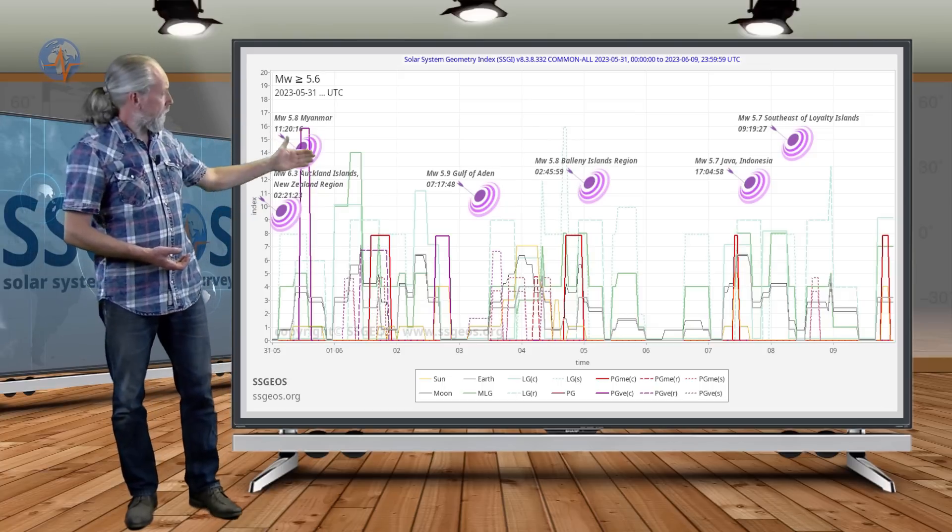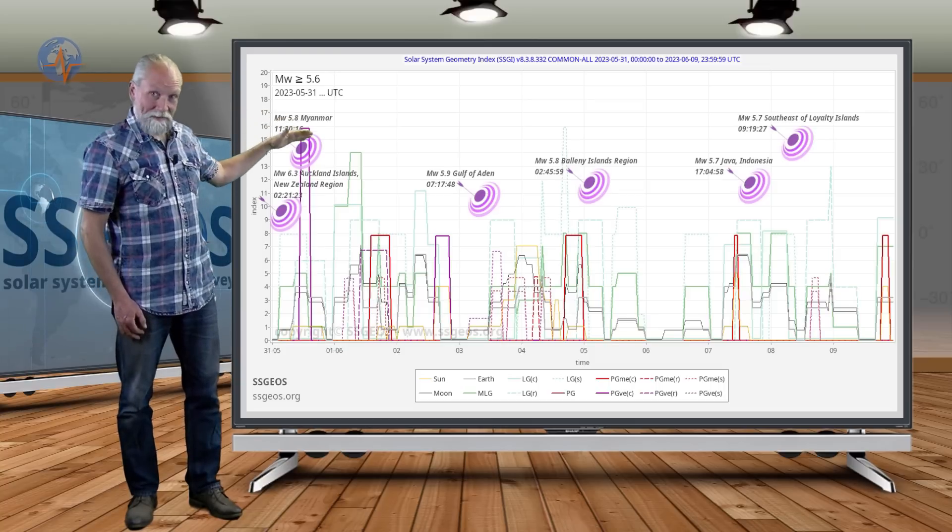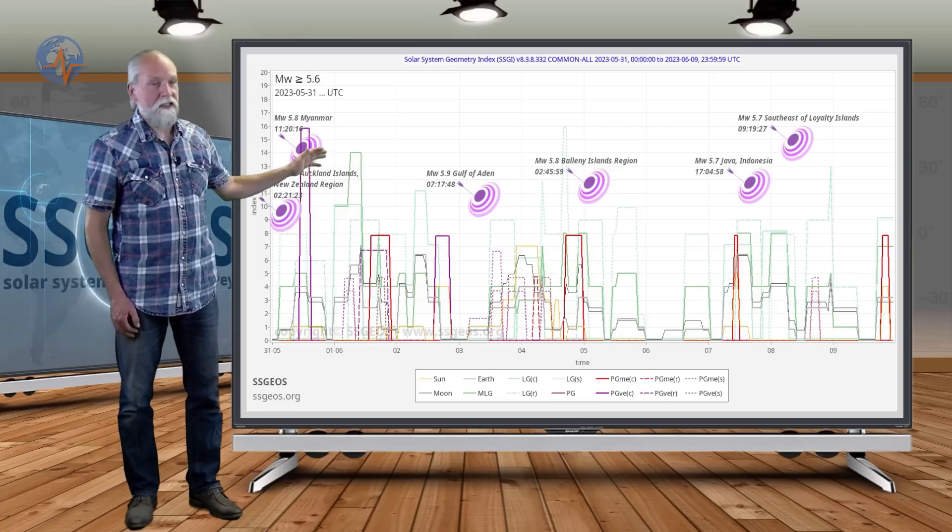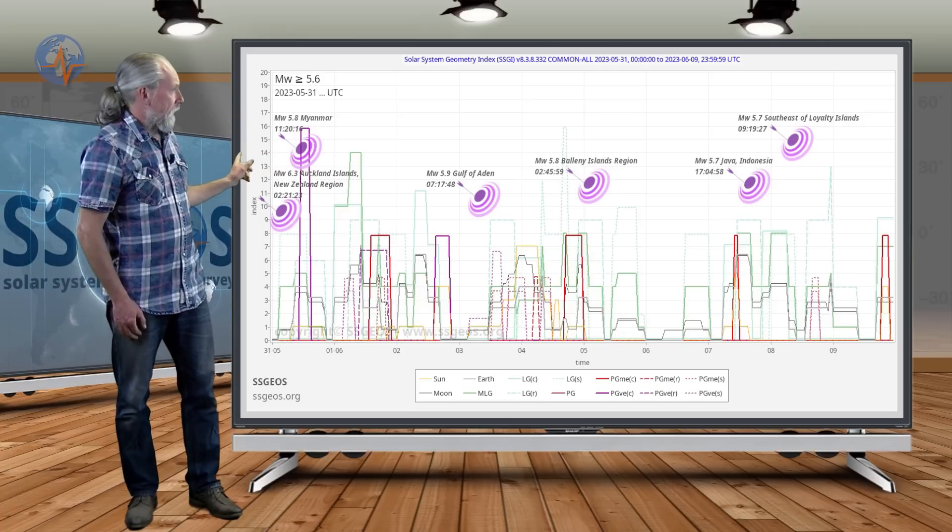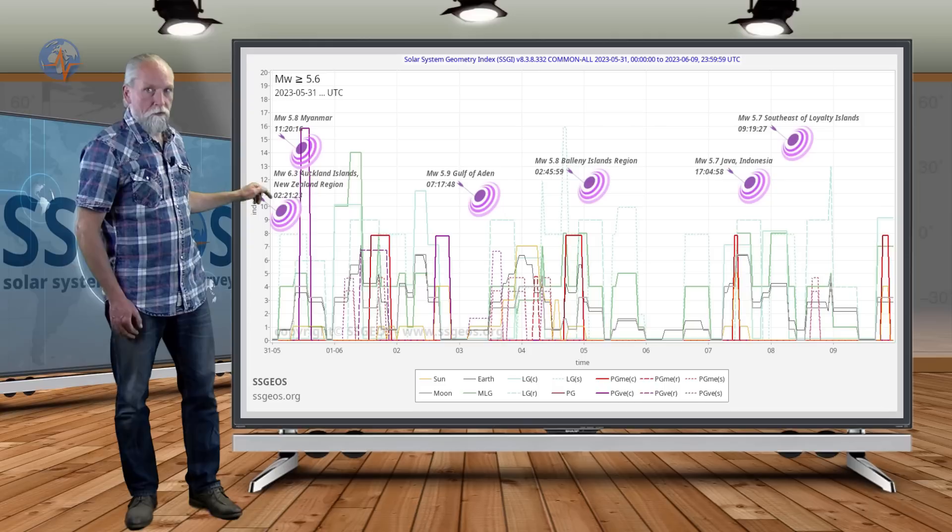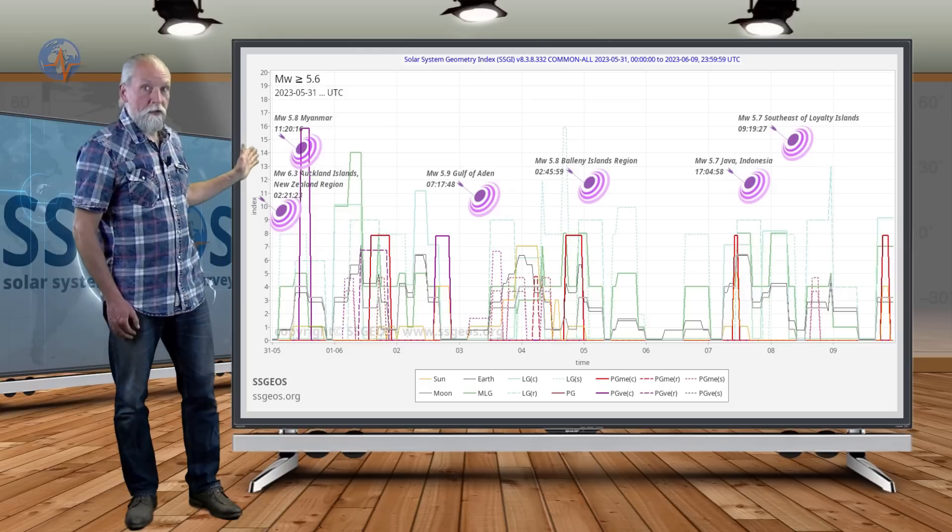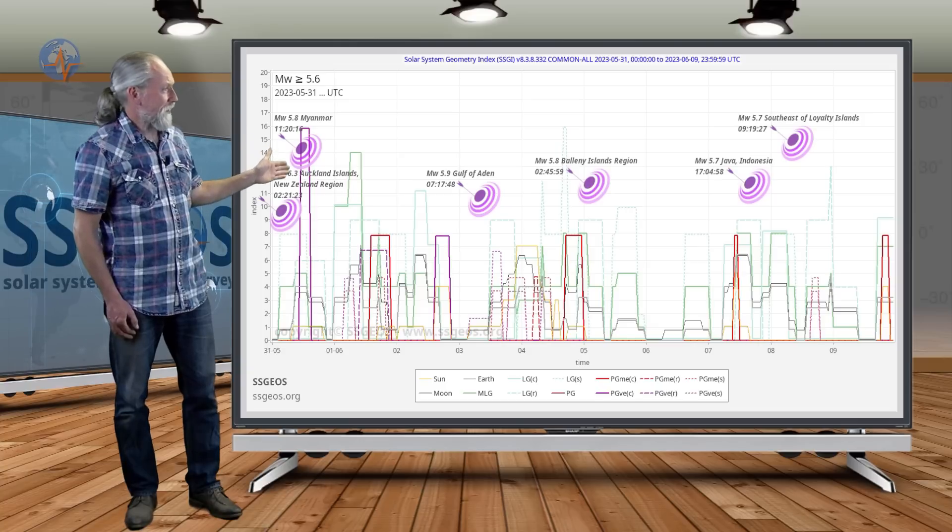If we look at the SEGI graph for the first week of June, magnitude 5.6 and larger, we do not see a magnitude 6 earthquake except for the 31st. That was the Auckland Islands region south of New Zealand, just preceding the Venus-Mercury-Neptune conjunction. That was the first in the convergence up until the second.